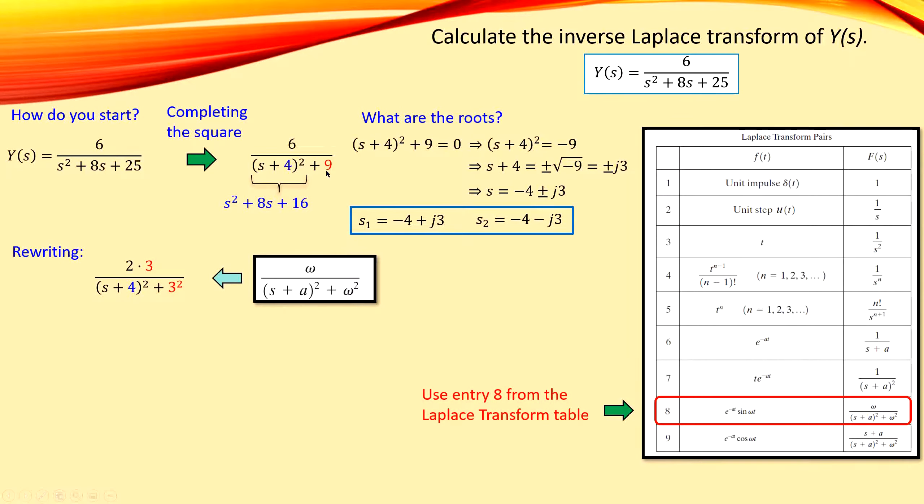So if I now do this, then this will be omega squared. So I need 3 squared. That would be of course 9. And in order to also have an omega here, I can rewrite this by 2 times 3. So I will have 2 times 3. That will also be the omega itself.